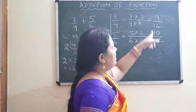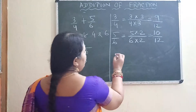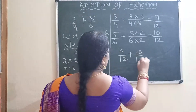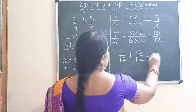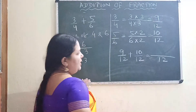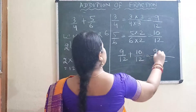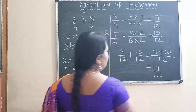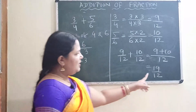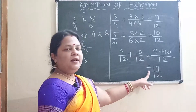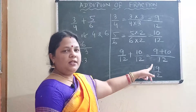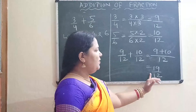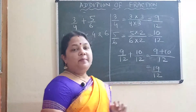Now we have both fractions as like fractions. So we can easily add: 9 by 12 plus 10 by 12. Apply the formula — 12 is the common denominator, then add the numerators: 9 plus 10 gives 19 by 12. Children, this is an improper fraction where the numerator is greater than the denominator.